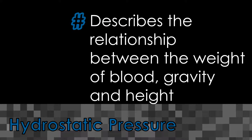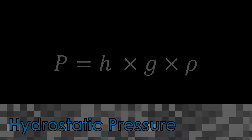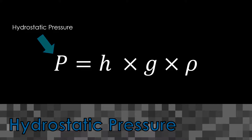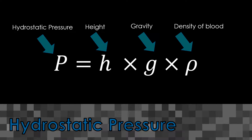In formulas, hydrostatic pressure is represented as a capital P. We can see the relationship of each element as they fit into the formula for calculating hydrostatic pressure. Hydrostatic pressure is measured in millimeters of mercury and is equal to the height of a column multiplied by gravity multiplied by the density of blood.